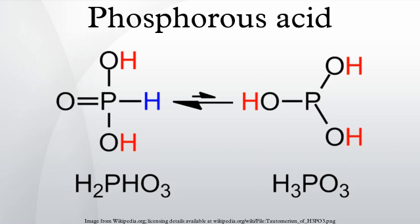Reactions. Phosphorus acid on heating at 200°C converts to phosphoric acid and phosphine: 4 H3PO3 → 3 H3PO4 + PH3. In practice, this reaction yields a number of undefined phosphorus suboxides as well.